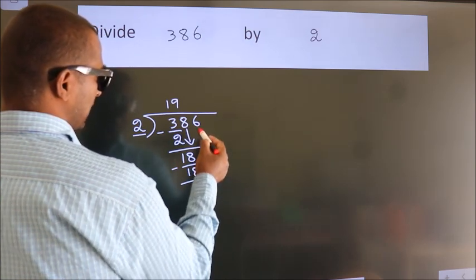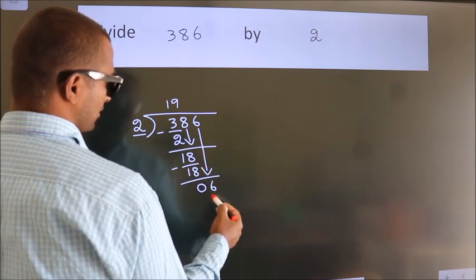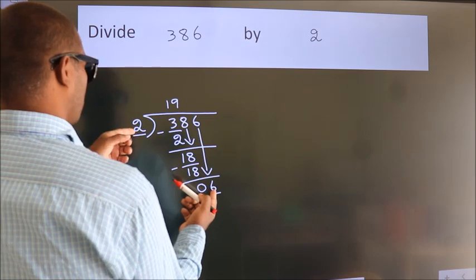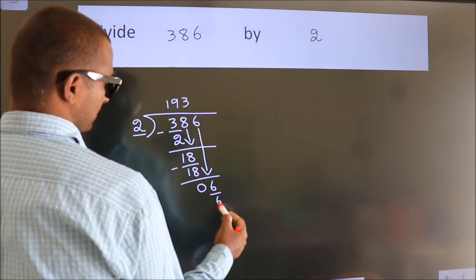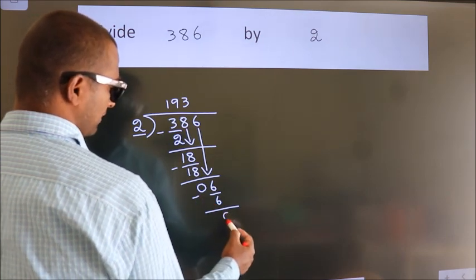After this, bring down the beside number. So 6 down. So 6. When do we get 6? In 2 table, 2 3s, 6. Now we subtract. We get 0.